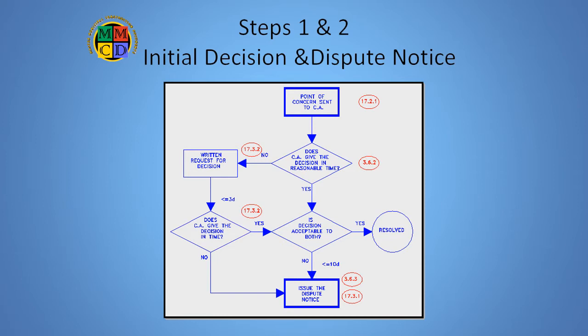Then within ten working days of receiving the initial decision, a party intending to pursue the dispute must file a formal dispute notice in writing. The ten days is a hard limit. Missing this deadline means the CA's initial decision becomes binding and is not appealable through the rest of the process. Let me repeat that. Failure to file a dispute notice within the ten-day requirement crystallizes the initial decision and no appeal is subsequently possible by either party. GC 17.3.3 and 17.3.4 define the requirements for the contents of the dispute notice and emphasize it must be a separate written notice, not just some mention in another document.